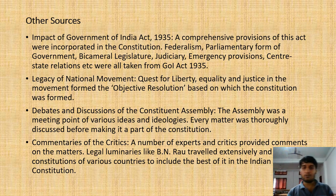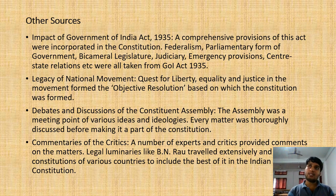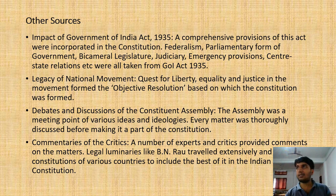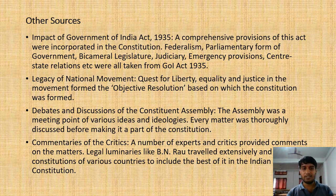Since the beginning of British rule in India from 1757 onwards, the British had been enacting a number of rules and regulations. One of the most important was the Government of India Act 1935. There were earlier acts of 1909 and 1919 where the bicameral system was introduced. The Act of 1935 gave a lot of power to provincial governments — the division of power between the centre and states, the concurrent list — all these were inculcated in the Government of India Act 1935. Some critics even accused the Constituent Assembly of borrowing wholesale from this Act.